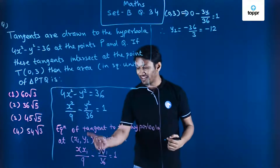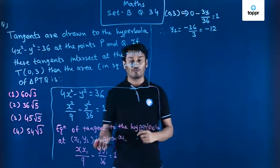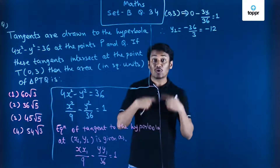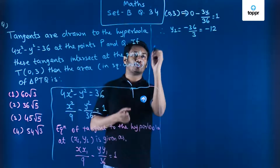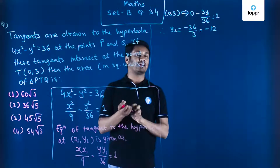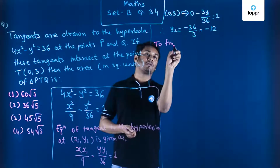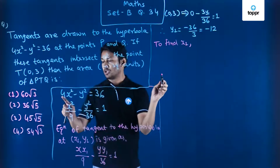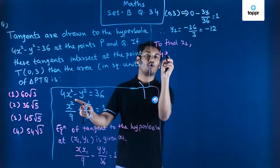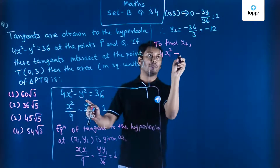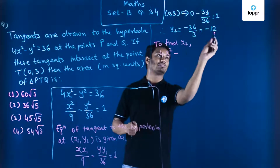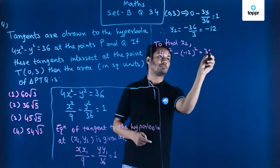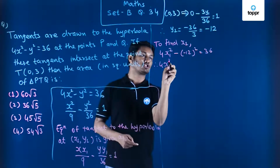Now we need to find x₁, the x-coordinate of the point. Since the point at which the tangents are drawn also lies on the hyperbola, we substitute into the hyperbola equation. We get 4x₁² minus y₁² equal to 36, and y₁² is (-12)² which is 144, so 4x₁² minus 144 equals 36.